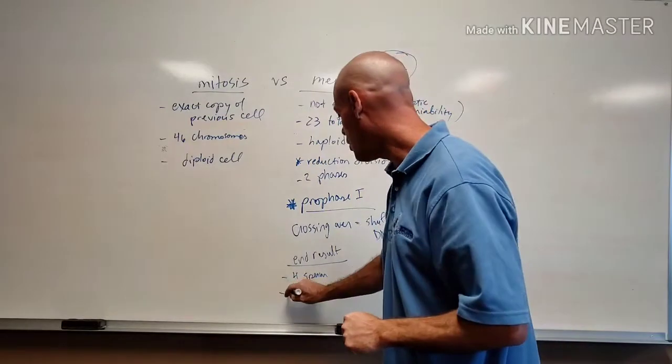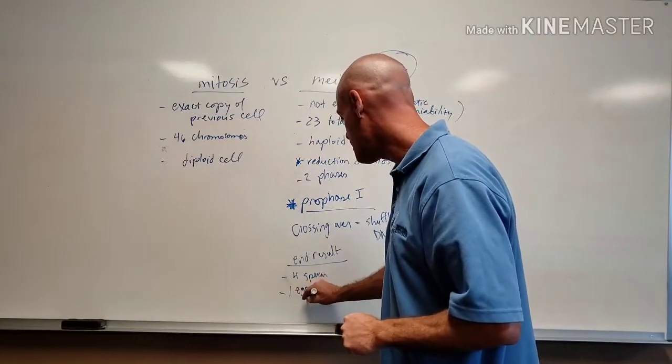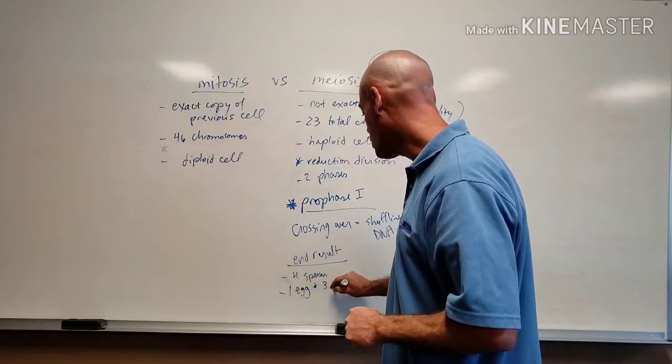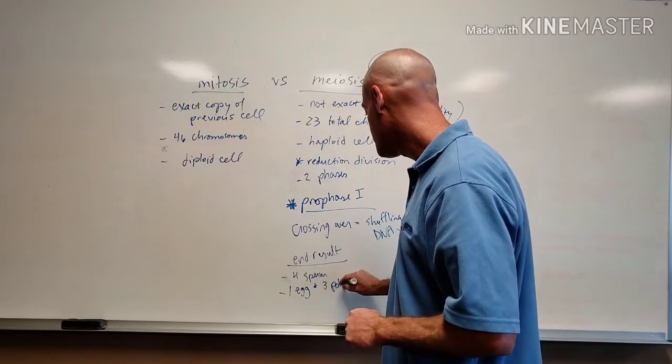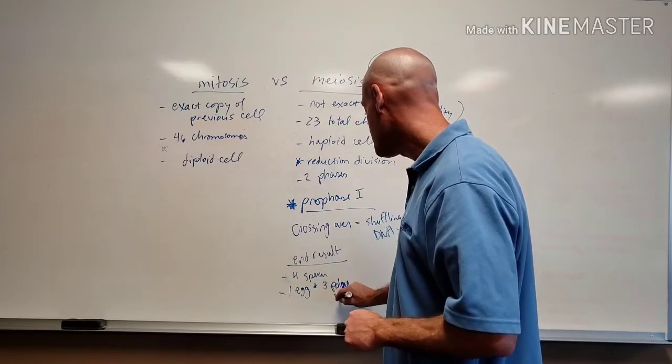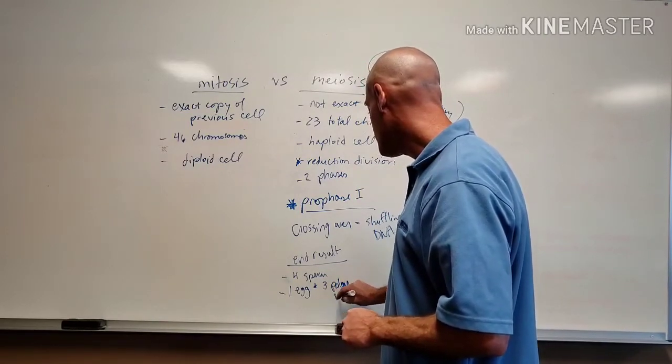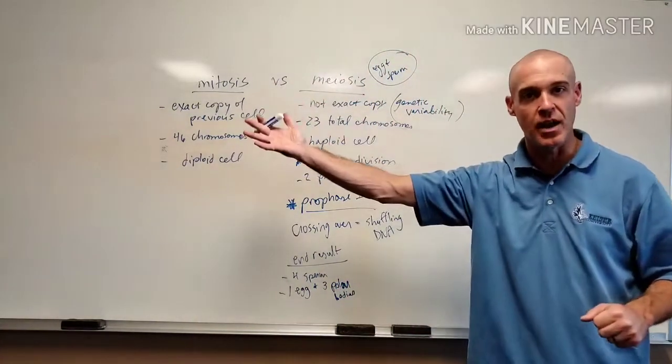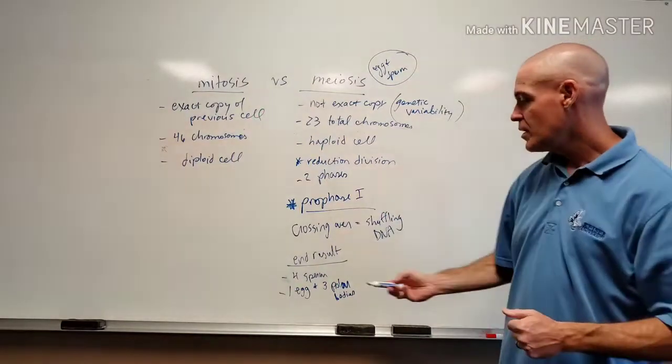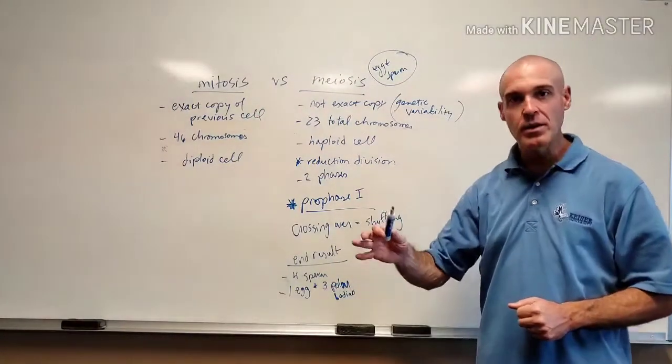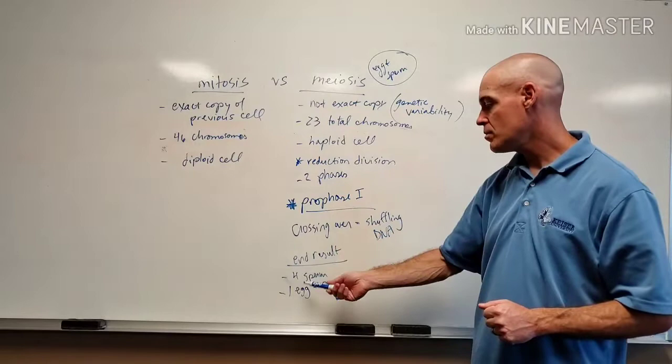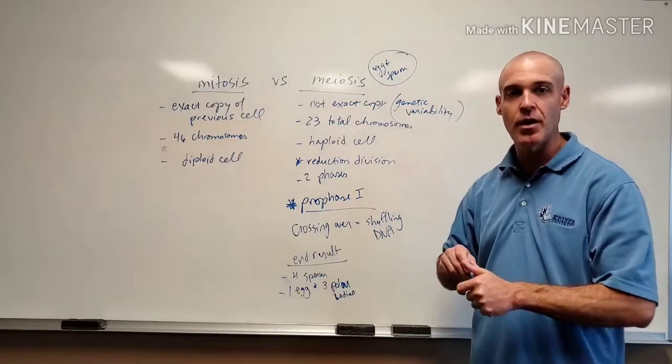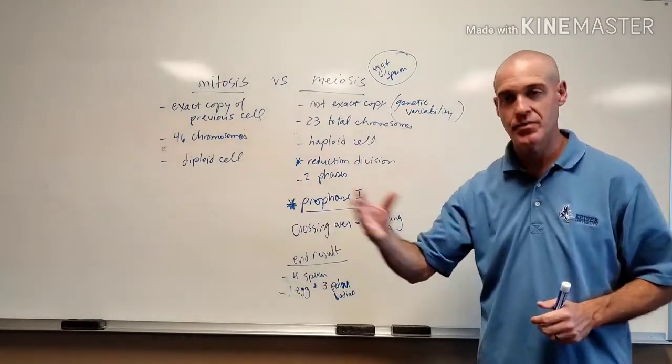In the female, we'll wind up with one egg and three polar bodies. Polar bodies. Now, what do the polar bodies, think of those as just extra three non-functional cells. Because it's true. Typically, each month, females are going to kind of have one egg released.